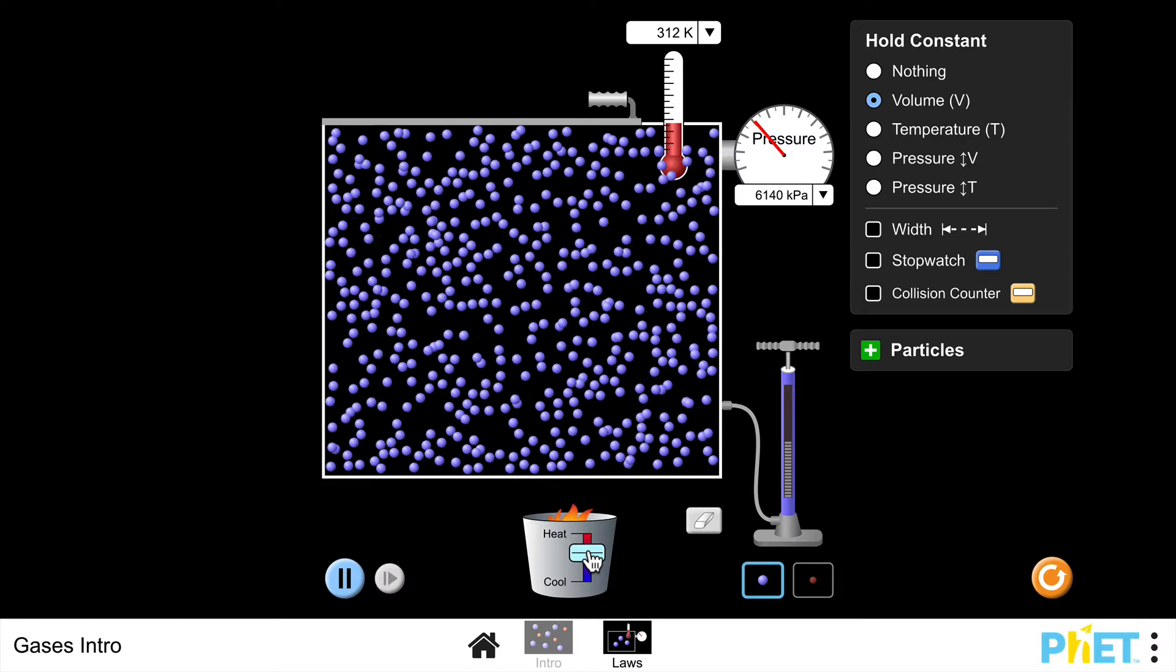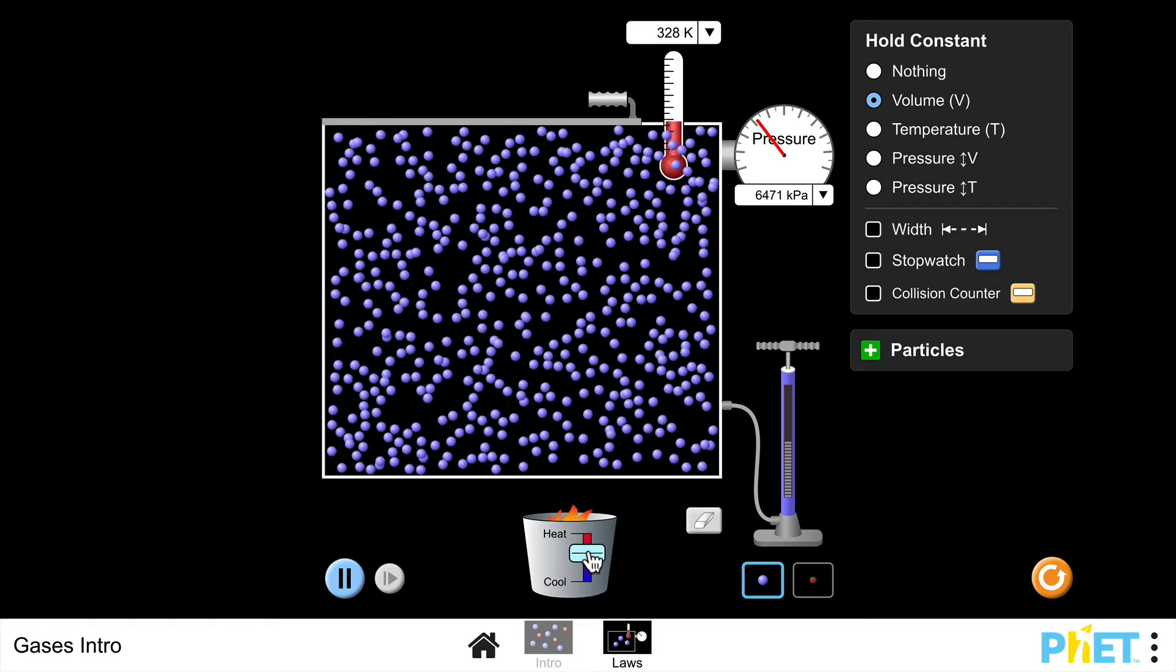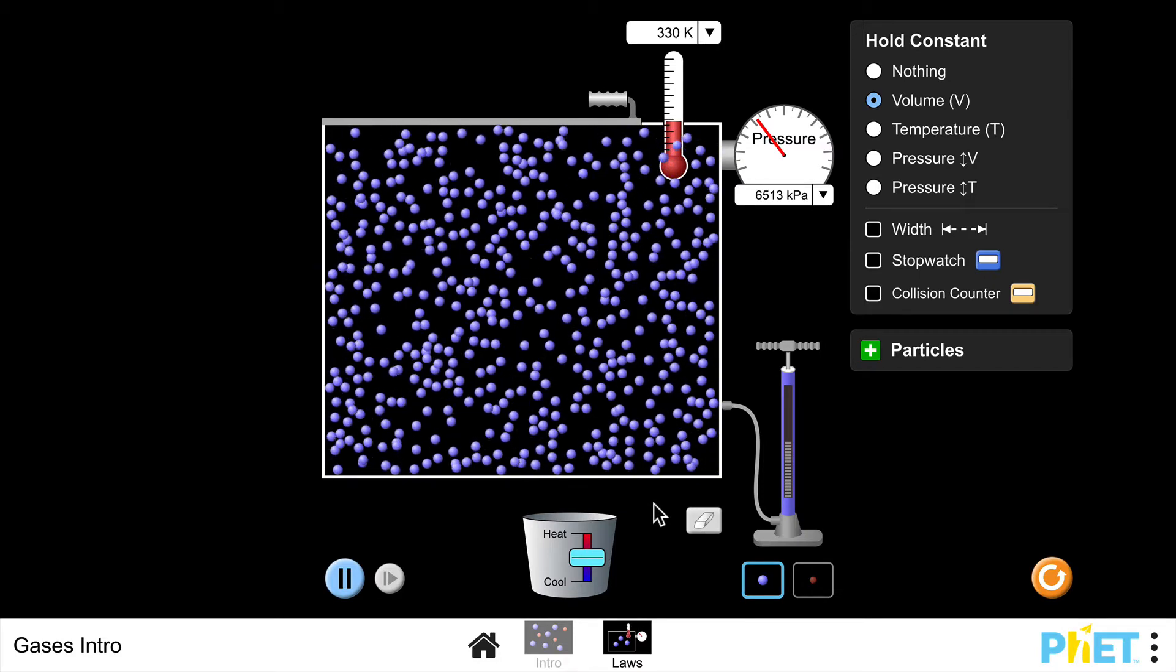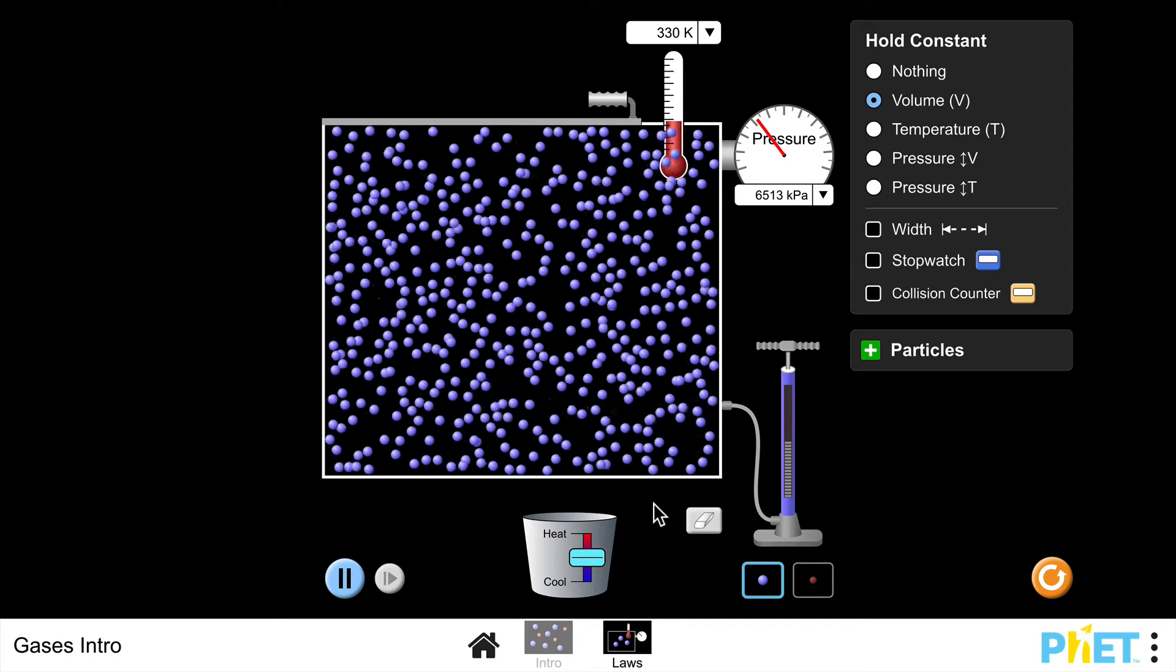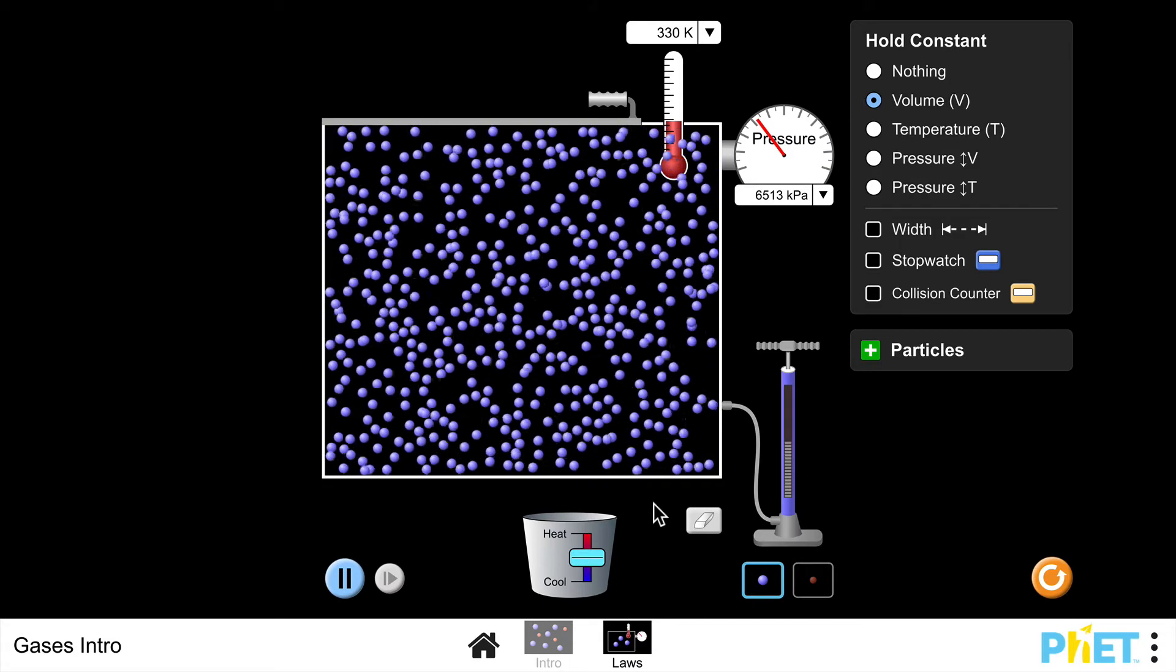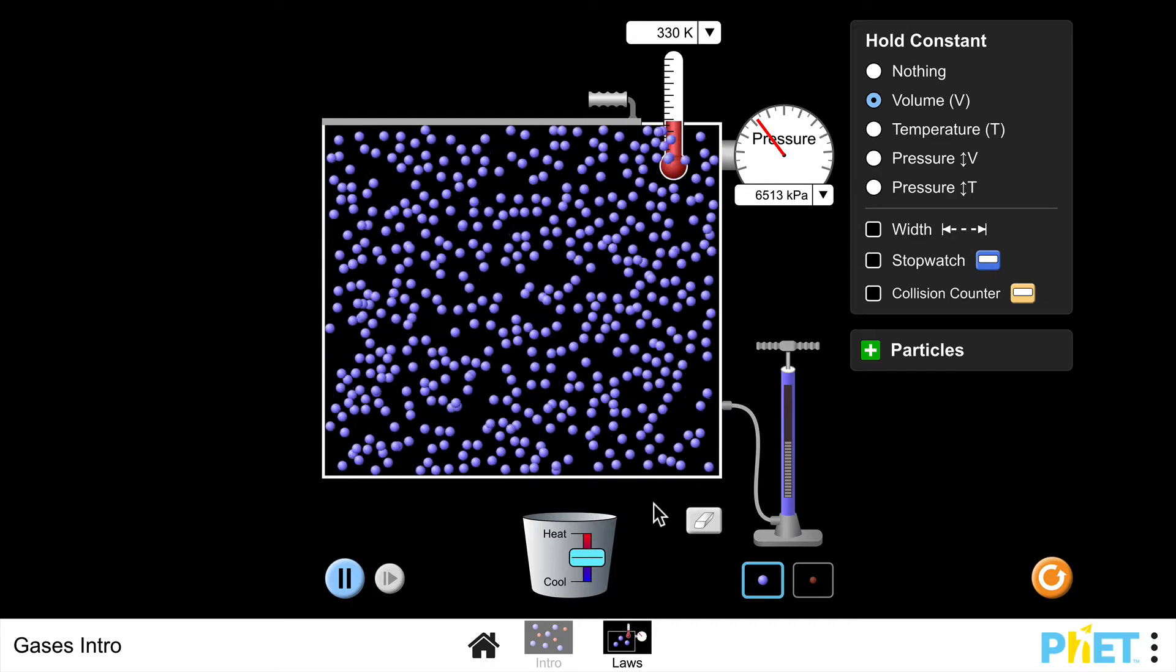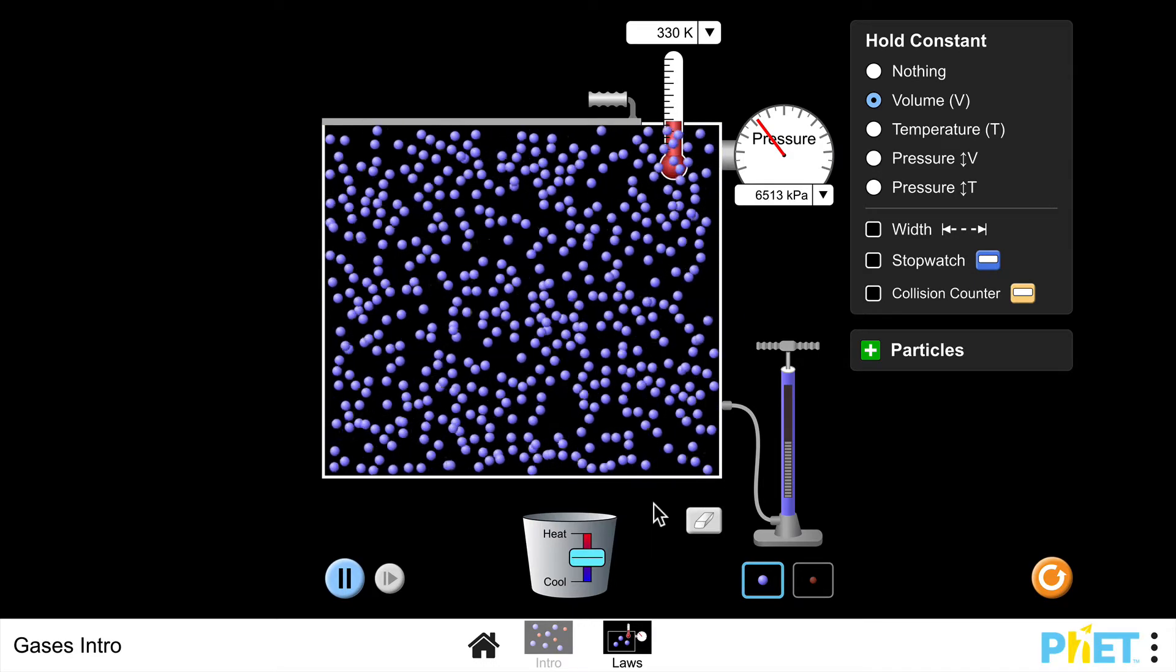Now, if you're asked for the relationship, it's not enough just to say that as temperature increases, pressure increases. What you would do once you have your 10 results is you could plot a graph. So the independent variable in this experiment, that's the thing we're in control of, that was the temperature.